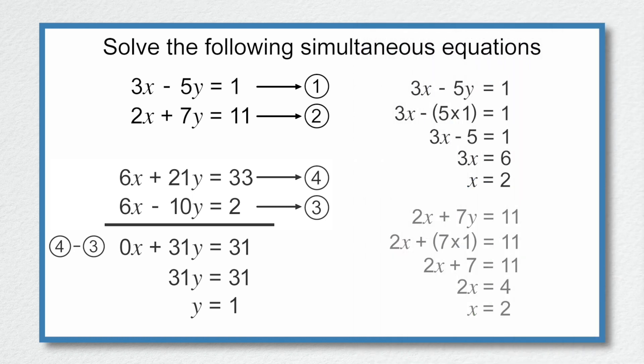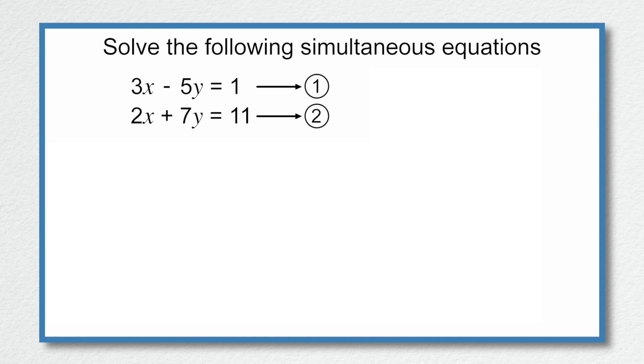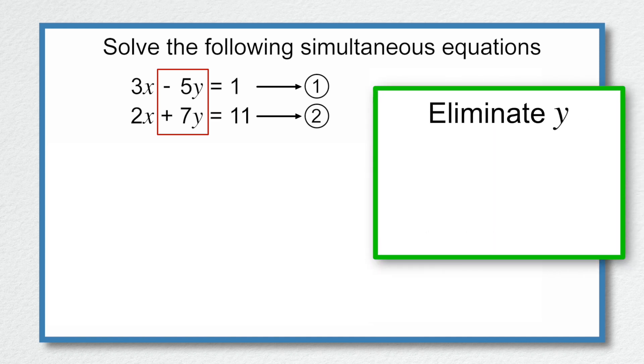Going back to the original equations again, I could have eliminated the y's to find x. Here's what I'm thinking. I have minus 5y in equation 1 and 7y in equation 2. I need to have the same amount of y's. If I multiply minus 5y by 7, I get minus 35y. And if I multiply 7y by 5, I get 35y. So I have minus 35y and 35y. And if I add these together, I get 0. So that's the strategy.